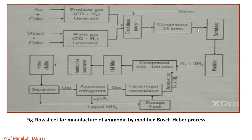The cooled gases are then compressed to 25 atmospheres by passing through a compressor. CO2 is removed by dissolving in water under pressure. Any remaining carbon monoxide is removed by absorbing in a solution of ammoniacal cuprous formate kept in a purifier. Then the mixture of pure N2 and H2 in the ratio 1:3 by volume is compressed to 200–300 atmospheres and filtered to remove any oil mixed in during compression.